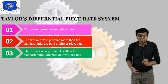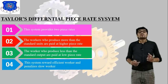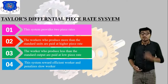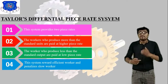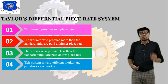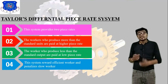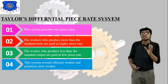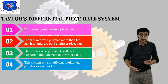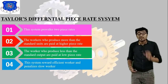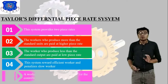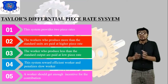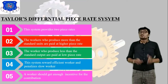So there are two types of piece rates in this system. The objectives of Taylor's Differential Piece Rate System are: this system rewards efficient workers and penalizes slow workers, so that productivity is increased. A worker should get enough incentive for their contribution.